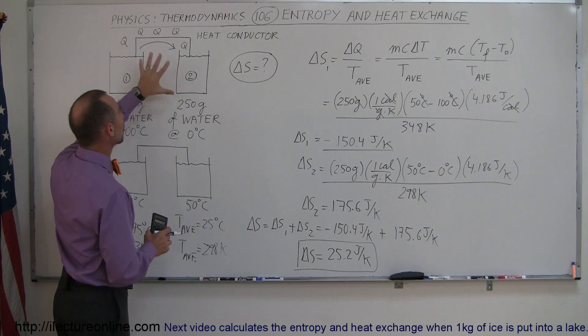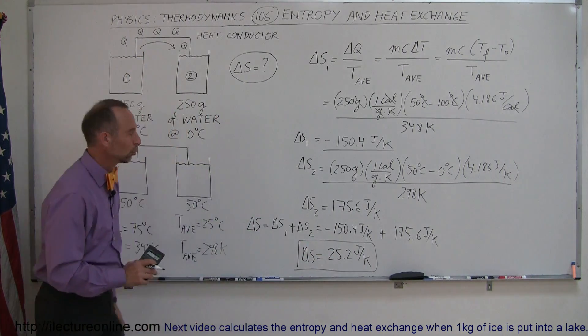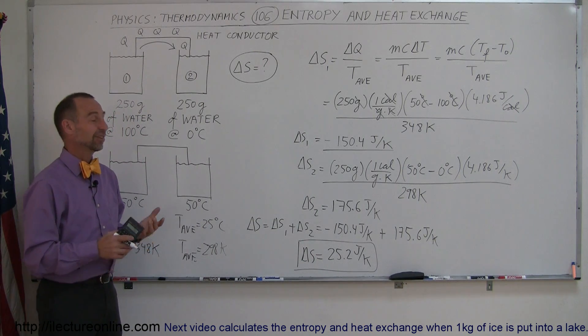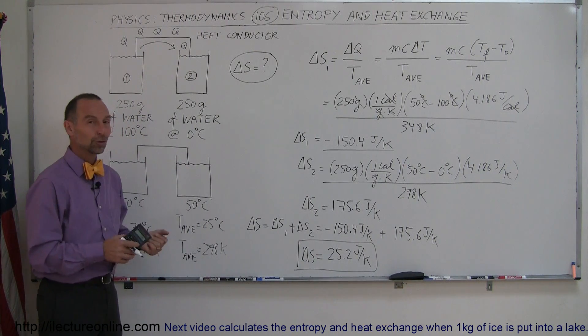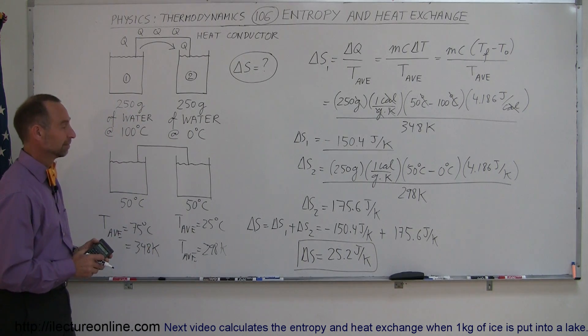Which is the delta S for this heat exchange. For the amount of heat that was exchanged from the hot cup to the cold cup, the universe's entropy increased by 25.2 joules per Kelvin. Which means, that's how much less available energy is to do work after we exchange that heat. And that's how you do that problem. Thank you.